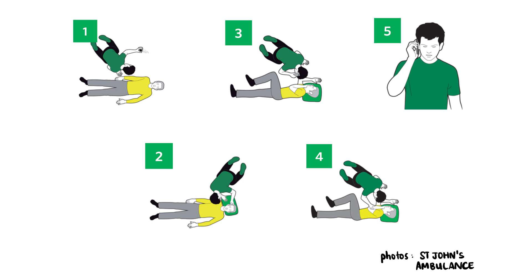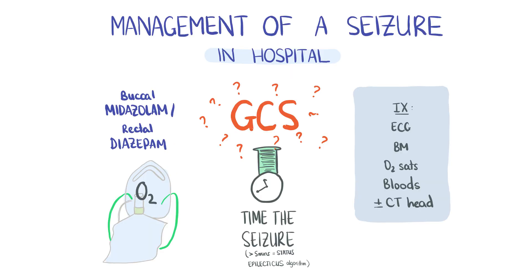Seizures are managed using first aid measures in the community: protect the patient's head, start a timer, and then put them into the recovery position once they finish seizing if they're breathing. If in hospital, first-line treatment is buccal midazolam or rectal diazepam, plus high-flow oxygen via a non-rebreather mask. Calculate the GCS and call the anaesthetists if the GCS is low, as this can lead to airway compromise and respiratory failure.